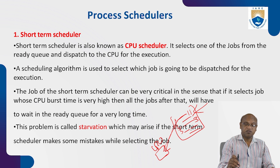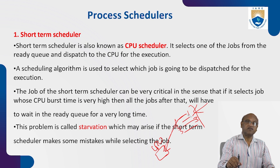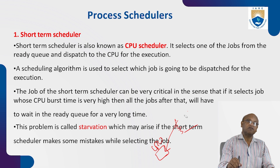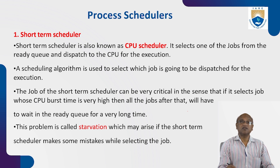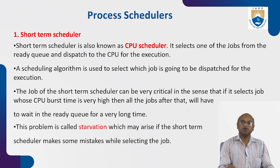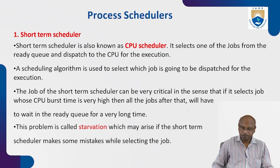The job of the short-term scheduler can be very critical: if it selects a job whose CPU burst time is very high, all jobs after that will have to wait in the ready queue for a very long time. There must be some orderly process to decide which instruction is sent to the CPU for execution. If a process waits too long in the ready queue, the problem is called starvation, which may arise if the short-term scheduler makes mistakes while selecting the job.